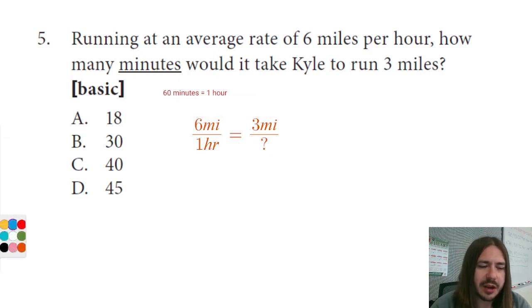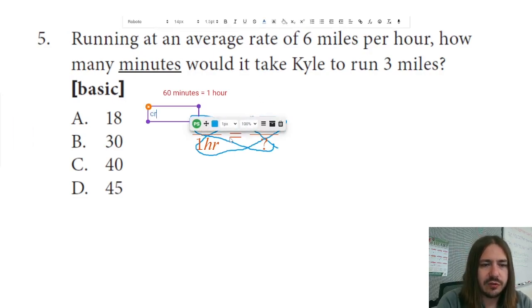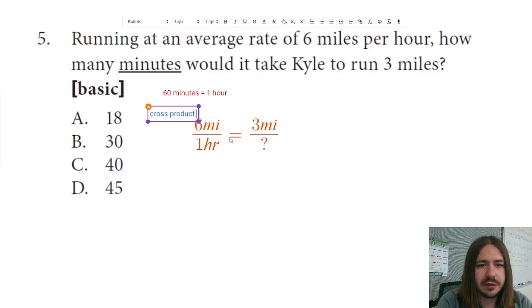But if you want to use the cross products property to solve this, what you would do is you would multiply each numerator by the other denominator and then set those two products equal to each other. Again, if you want to look up more information about this technique, this is using the cross product property.